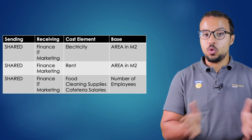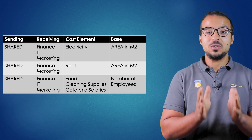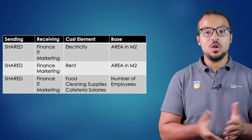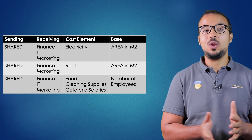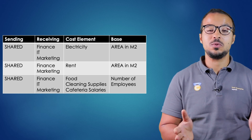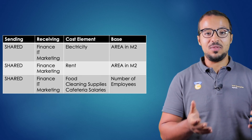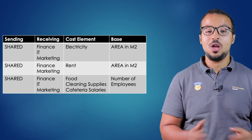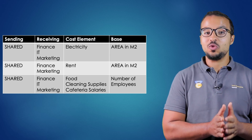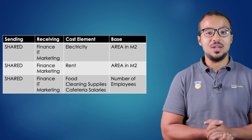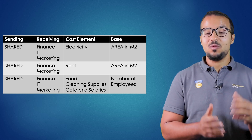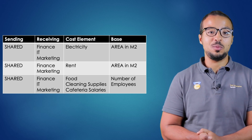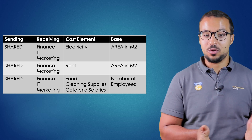For every cost element or group of cost elements, we choose the allocation base — how we want to allocate the costs to the different cost centers. For example, rent expense is allocated based on square meters per department. If accounting occupies 300 square meters and marketing occupies 100 square meters, the total is 400. So accounting receives 3/4 of the rent and marketing receives 1/4.